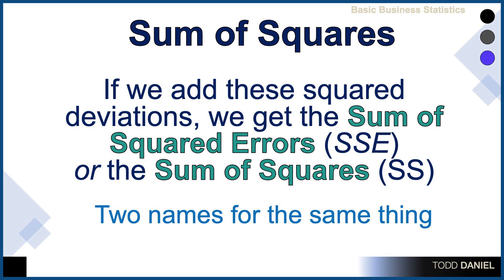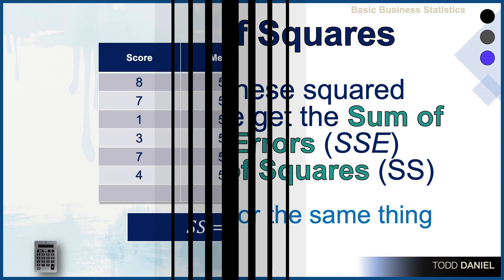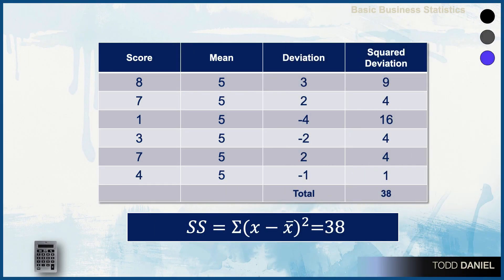Let's look at this information in a table. In the first column we have the raw scores from our data. In the second column, the mean. And in the third column, we have subtracted the mean from each raw score, giving us a deviation score — some of which are positive, others of which are negative. The negative scores balance out the positive scores, giving us a total deviation of zero.